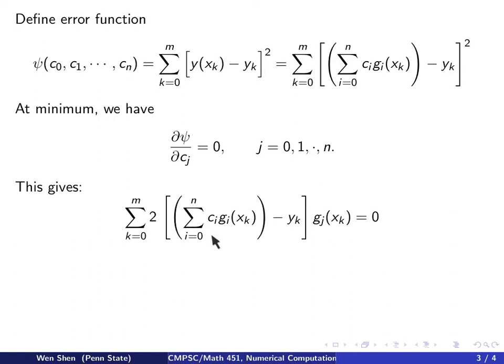For that term where i matches j, you differentiate this expression in c_j, which gives the coefficient in front of c_j, which is exactly g_j at x_k. This equation holds for all j's. We see that the factor of 2 doesn't matter, we can cross it out.